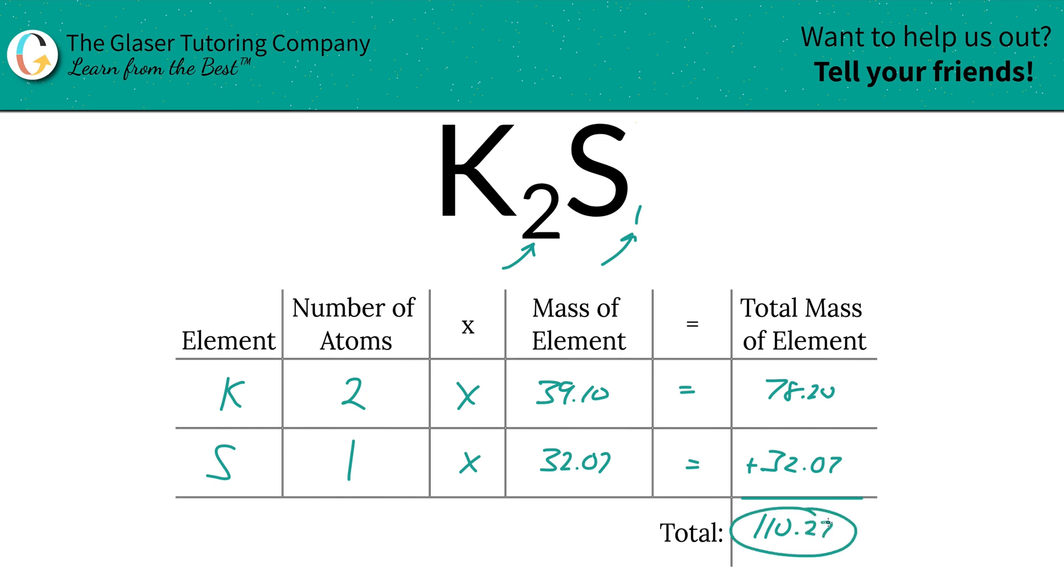To finding these mass percents, or the percent composition of each element, what I'm going to do now is add a column to the table, and the rest is easy peasy.